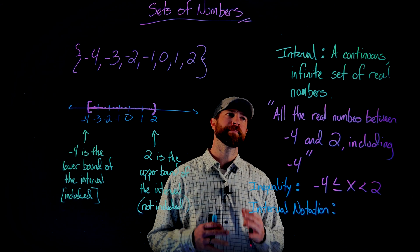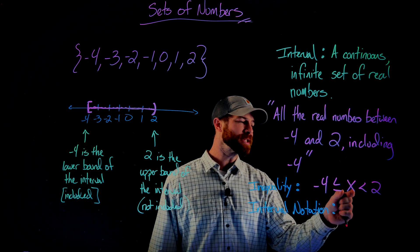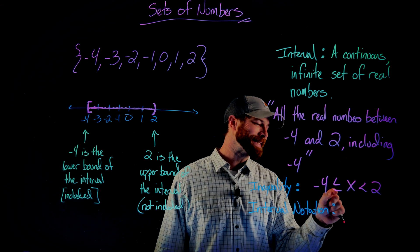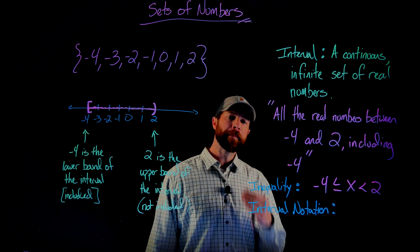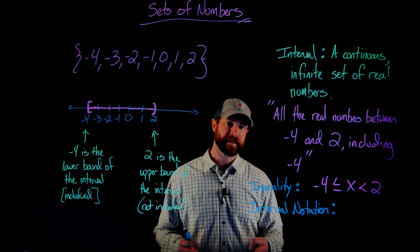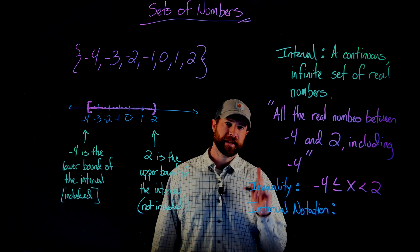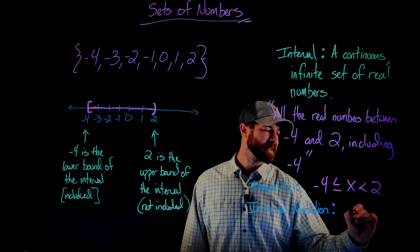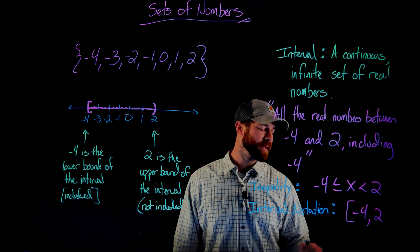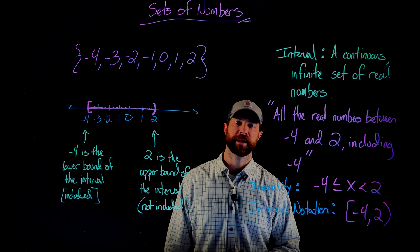Interval notation is a tighter format for describing this. Notice that x isn't actually necessary — the negative 4 and the 2 are what matter, along with whether each endpoint is included or not. When writing interval notation, I use the lower bound and upper bound, then indicate whether they are included. It would look like this: negative 4 comma 2. Just like on the number line, I put a bracket around the negative 4 to say it's included, and a parenthesis around the 2 to say it's not included: [-4, 2).